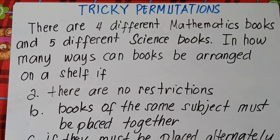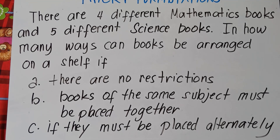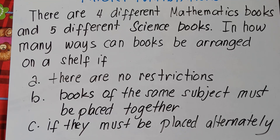So we have an example right here. There are four different mathematics books and five different science books. In how many ways can books be arranged on a shelf if: Letter A, there are no restrictions; Letter B, books of the same subject must be placed together; and Letter C, if they must be placed alternately.